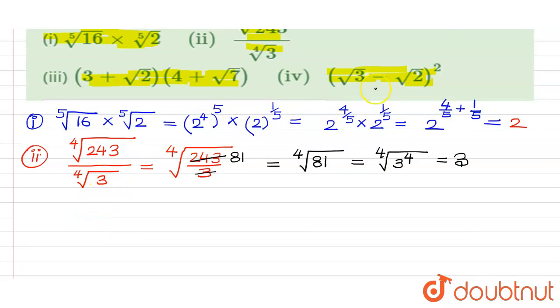Coming to third one. So third one we have 3 plus root 2 multiplied by 4 plus root 7. Simply multiply these two terms. So we get 12 plus 3 root 7 plus 4 root 2 plus root 14. So this is the answer.